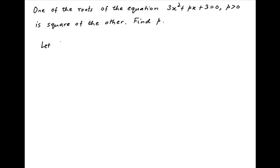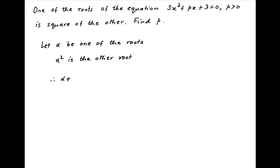Let alpha be one of the roots of the quadratic equation 3x² + px + 3 = 0, and therefore alpha square is the other root. So the sum of the roots, alpha plus alpha square, is equal to minus p upon 3, and the product of the roots, alpha times alpha square, which equals alpha cube, is equal to 3 upon 3, which is equal to 1.